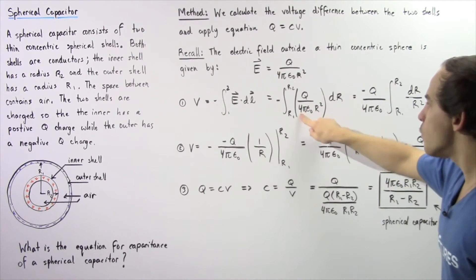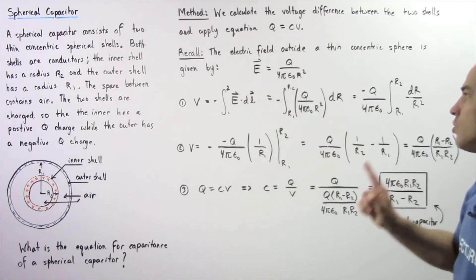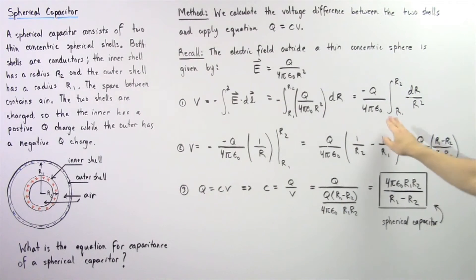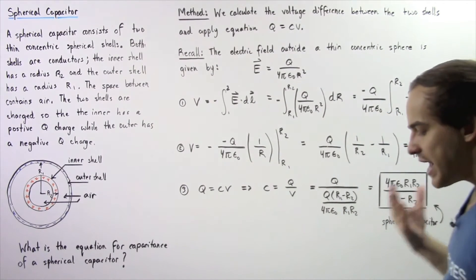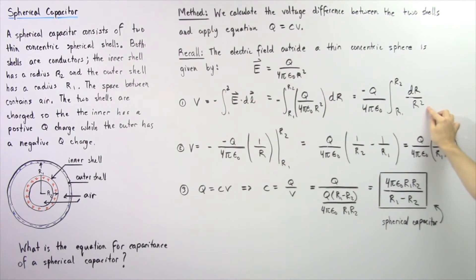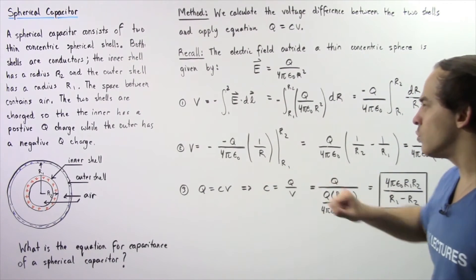The Q is a constant, and 4π epsilon naught is also a constant. We can take that and bring it outside of our integral. When we integrate, the 2 becomes a 1, and we multiply the whole quantity by negative 1, giving us the following result.